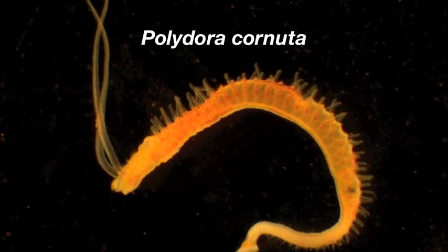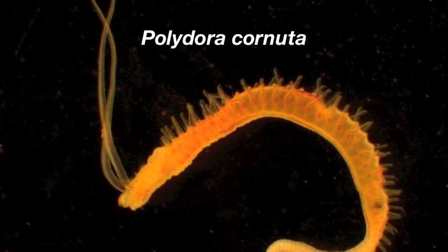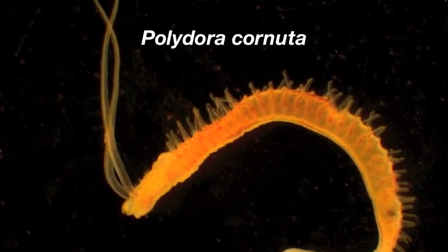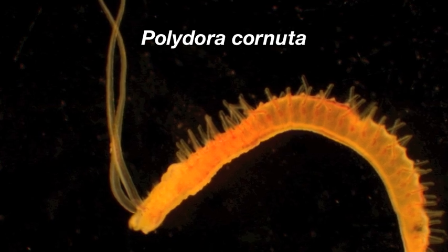Spionid polychaetes, like this species Polydora cornuta, are microscopic worms that live on the seafloor. They are especially abundant in coastal and estuarine sediments. There can be over 1,000 living in a square foot of mud.